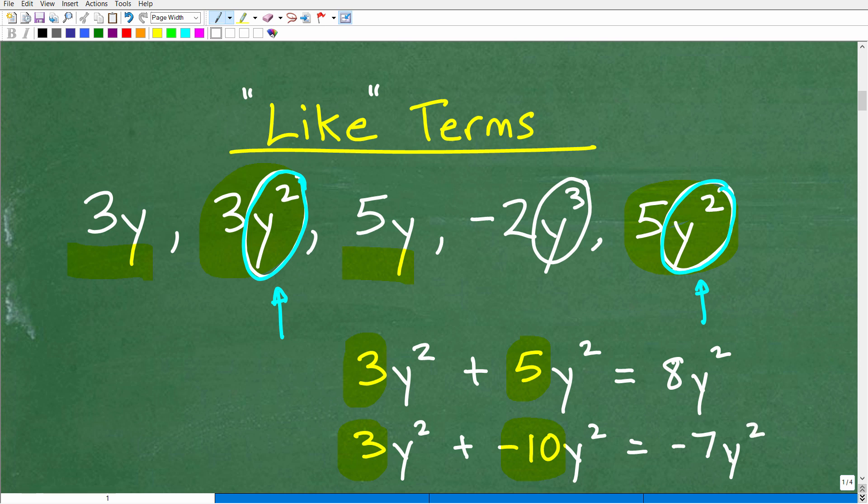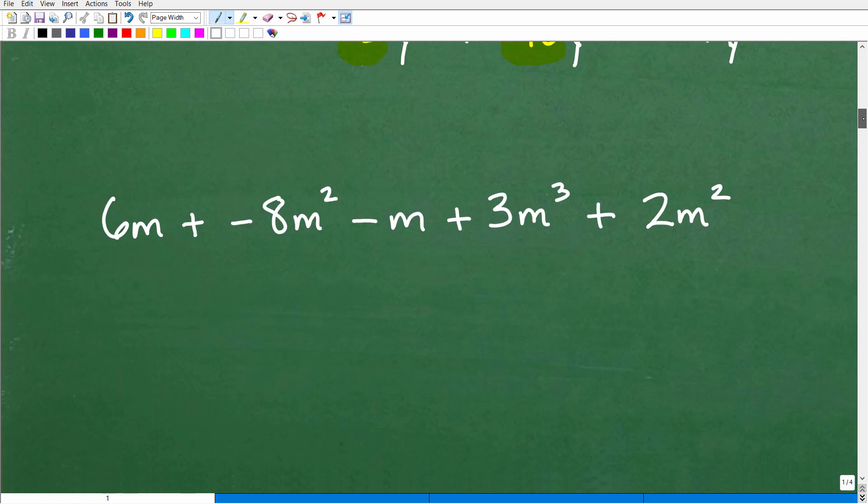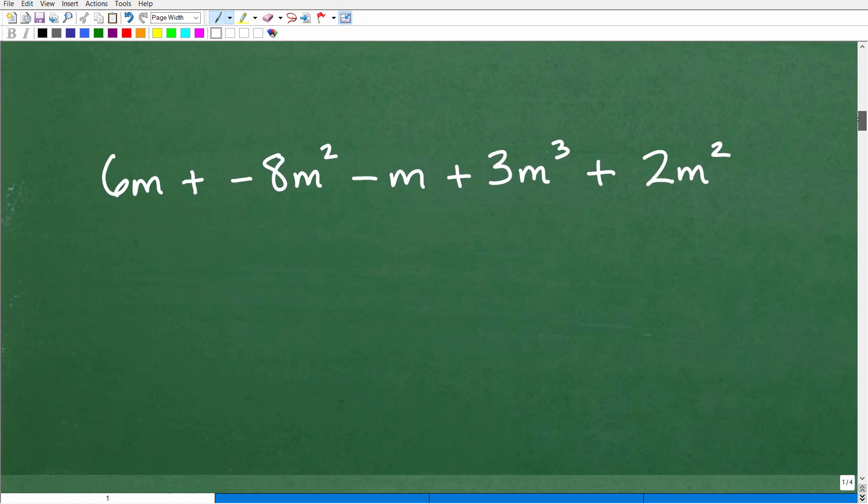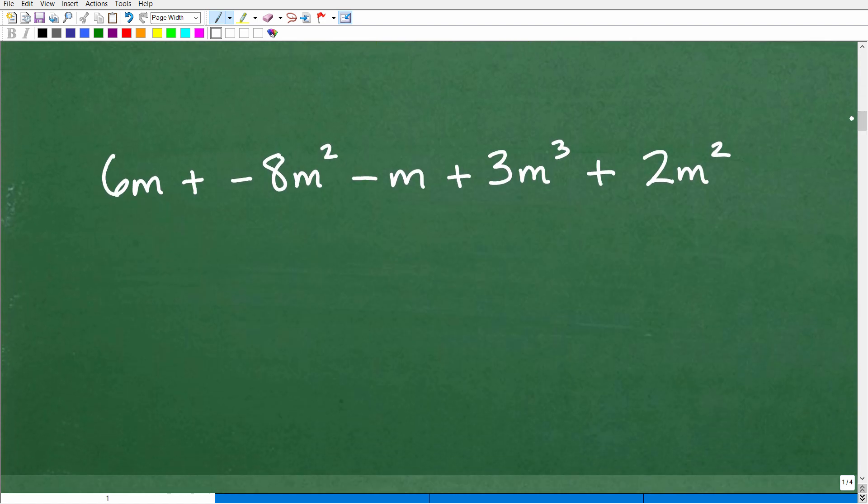Again, what we're doing here is combining like terms. And the way we're doing it is first identifying which terms are like. And then we're going to add the coefficients of those respective like terms. So let's go ahead and take a look at this little final practice problem. If you think you could do this, go ahead and pause the video and add up any like terms if you see any.